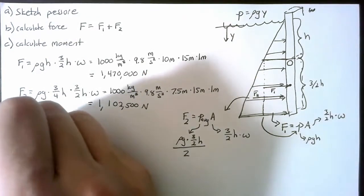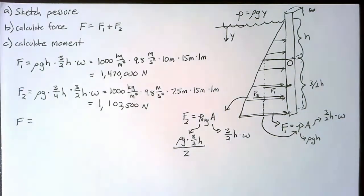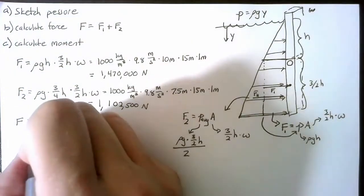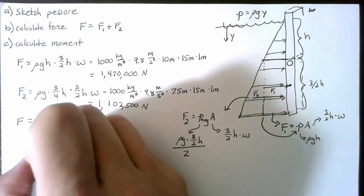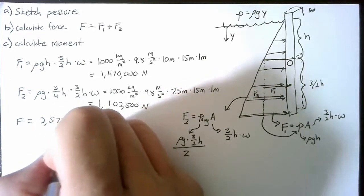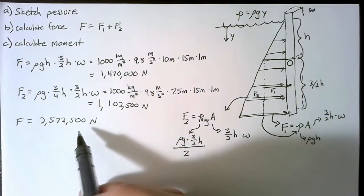So our force is just the addition of those two, and we end up with 2,572,500. Which is exactly what we got the hard way.